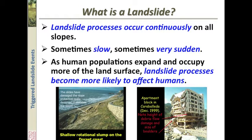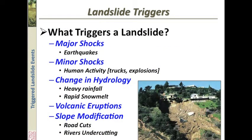As human populations expand, landslide processes become more likely to affect humans. What triggers a landslide? We can have major shocks like earthquakes which shake the ground, and then minor shocks such as human activity, troughs, and explosions. We can have changes in hydrology — heavy rainfall, or a sudden increase in temperature which might cause snowmelt in the upper mountains and cause a large increase in hydrology. Volcanic eruptions, slope modifications such as road cuts and river undercutting are also triggers.